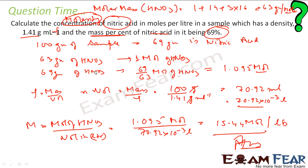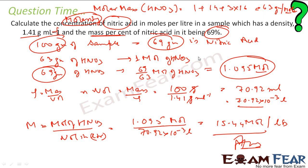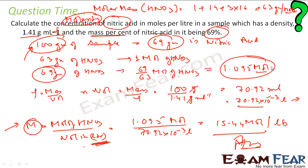So since I had to find molarity, I found moles per liter. First, I assumed 100 grams of sample and found the number of grams of nitric acid, then converted to moles. Then I found the volume of solution from the mass and density — 70.92 milliliters, converted to liters — and applied the formula: molarity equals moles of HNO3 divided by volume in liters, giving 15.44 mol/L.